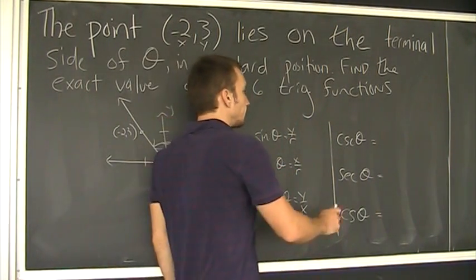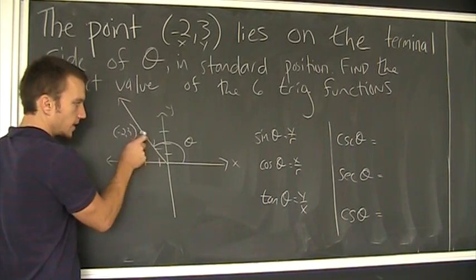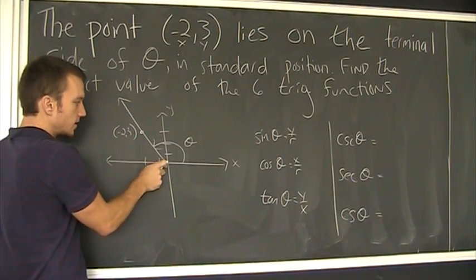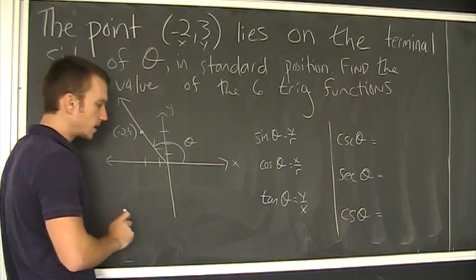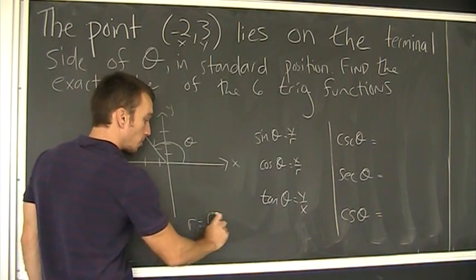First thing we need to do is find r so I can get these two values. So, r is the distance from here to here. Remember that? The distance from here to here. And we can get that from the Pythagorean theorem.